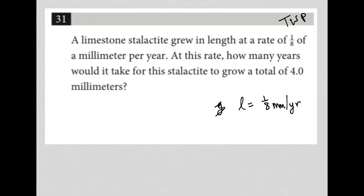OK, so we're just going one eighth of a millimeter per year. So that means it would take eight years, right? If you think about it, just multiply that by eight. Eight years would equal one millimeter. So if I want to get to four millimeters, I need to multiply this by four and therefore it would take 32 years to get to four millimeters.